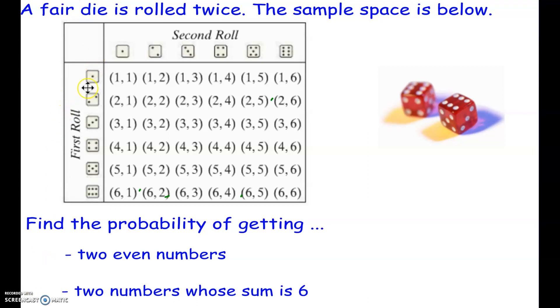We're going to do this in an organized way, and that is to identify the first roll in a vertical column here, 1 through 6, and then across the top, the second roll is going to be identified 1 through 6.